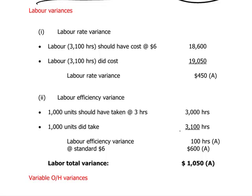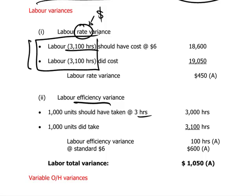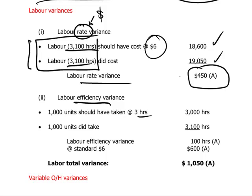For labor variances: the labor rate variance concerns monetary amounts paid for labor, while efficiency concerns how fast labor works, measured in hours. Actual labor used was 3,100 hours. Those hours should have cost $6 per hour — i.e., $18,600 — but actually cost $19,050. Therefore the labor rate variance is $450 adverse.